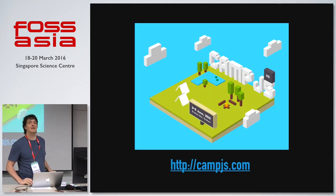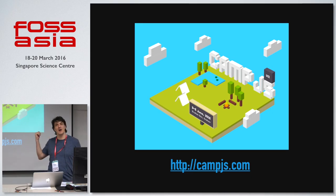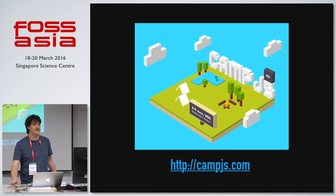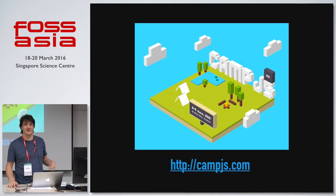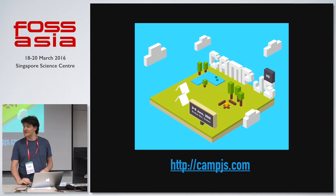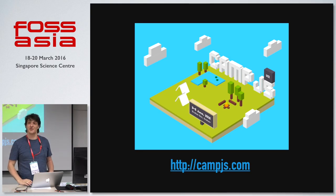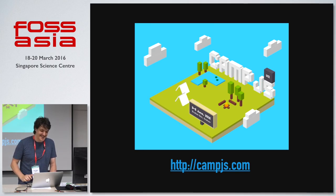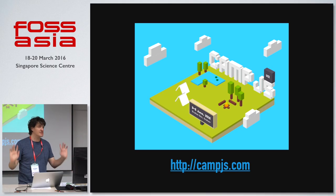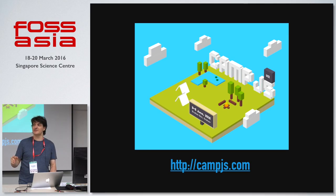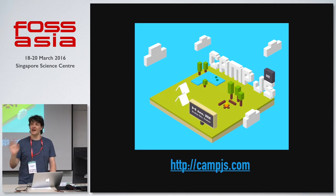One more thing — CampJS, just a little plug. I don't run this conference anymore, but it's one that I started, happening in Australia, in Sydney. The dates are here: third to sixth of June 2016. Go to the website — this is actually a good example of over-engineering, it's all 3D. I didn't build it, but please come to my conference. It's a lot of fun, goes for the whole weekend. There are people in Singapore who have been to CampJS and I've heard that it's good. Thanks very much.